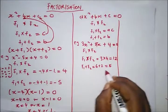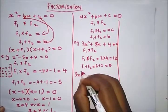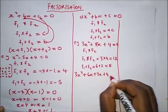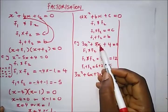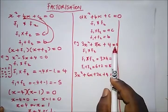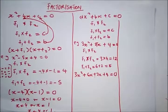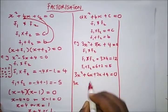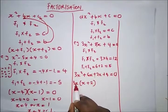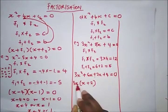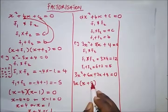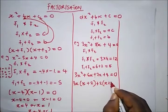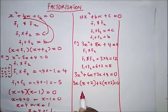Now we substitute: 3x² + 6x + 2x + 4 = 0, because 6x + 2x = 8x, which matches our original equation. We split the expression and take common factors. From the first two terms: 3x(x + 2), since 3x × x = 3x² and 3x × 2 = 6x. From the last two terms: 2(x + 2) = 0.